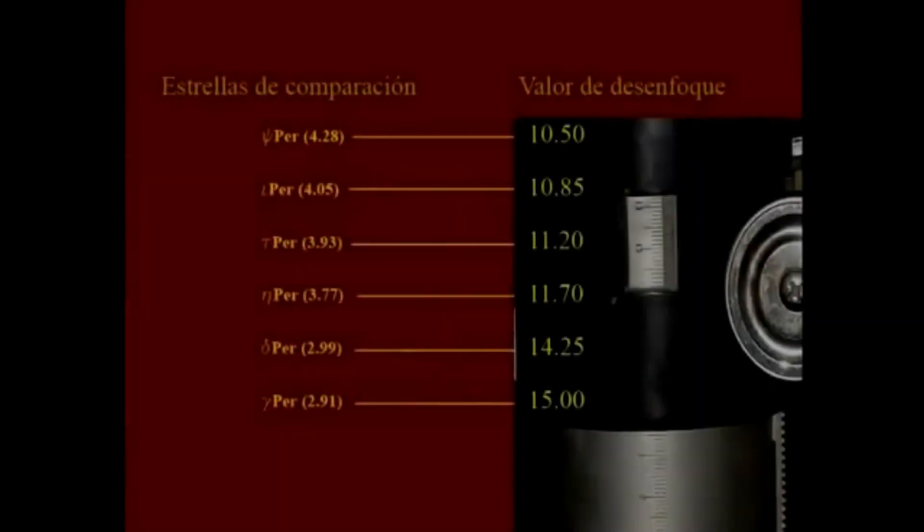Posteriormente, y con el cometa en el campo del telescopio, vamos desenfocando la imagen lentamente, hasta que logremos que la imagen del cometa se disuelva completamente en el fondo oscuro. Anotamos entonces este valor, que sería el valor de desenfoque del cometa. Posteriormente, hacemos esta misma operación con varias estrellas con una magnitud aproximada por debajo y por encima de la coma del cometa.